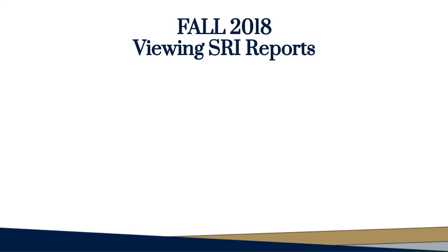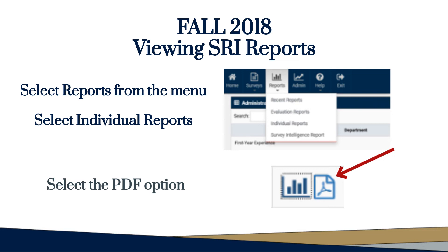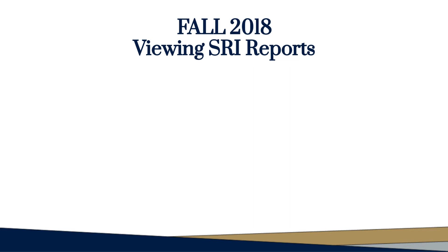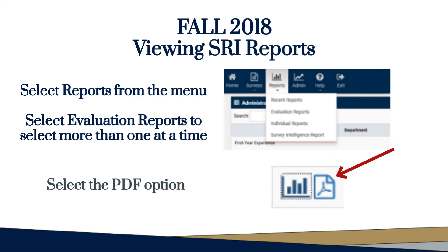There are several report options. Select Reports from the menu, then select Individual Reports, and select the PDF option. Alternatively, select Reports from the menu, then select Evaluation Reports to select more than one at a time, and select the PDF option.